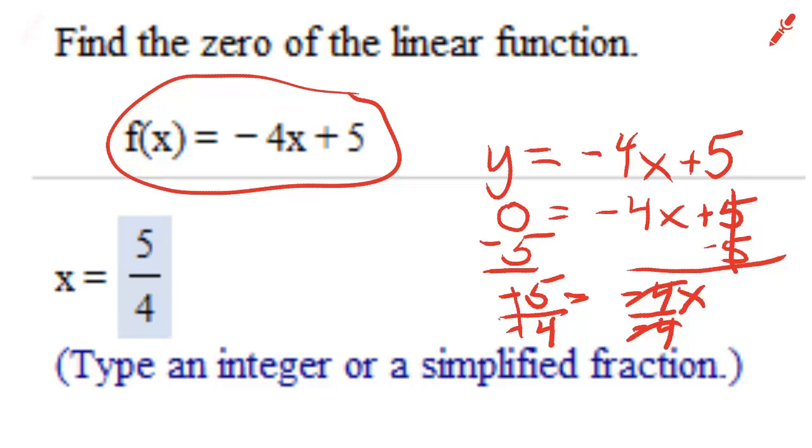When you set y equal to zero and solve for x, the answer you get is called the zero of the function. Now for those of you who remember about intercepts, you'll notice this is also the way you find the x-intercept. There's an intimate relationship between zeros and x-intercepts as we're about to see.